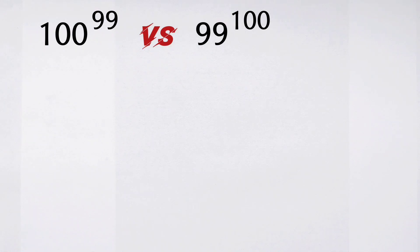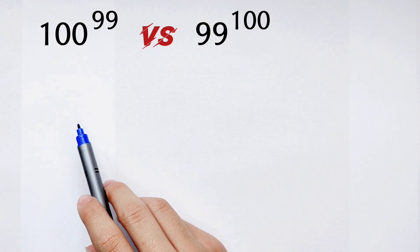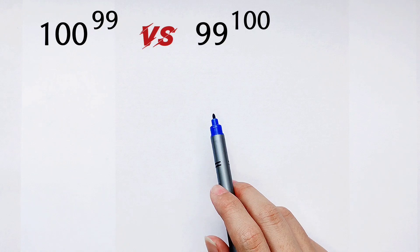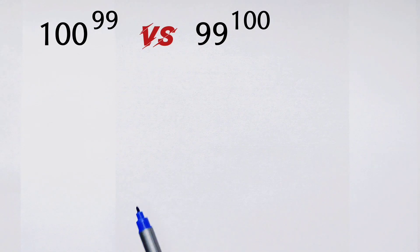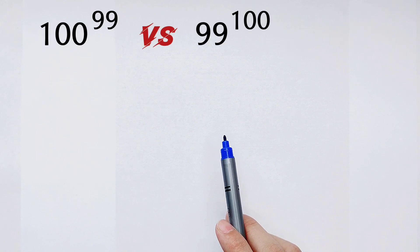Welcome to Math We Know. Comparing which is larger: 100^99 or 99^100, we've noticed that their forms are the same—that is, the base to the power of the exponent.